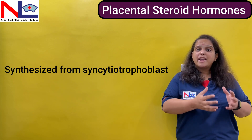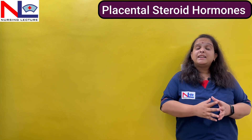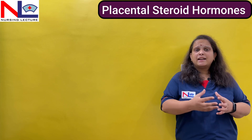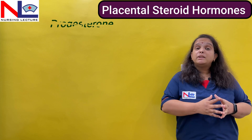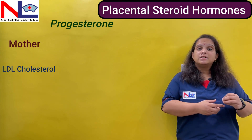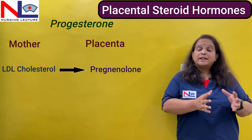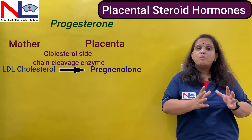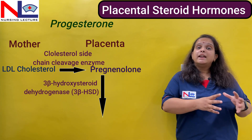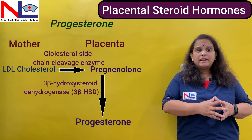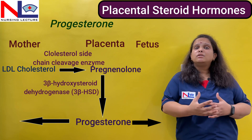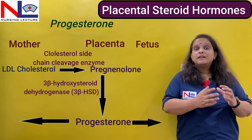To synthesize these hormones, the placenta utilizes some precursors — that is, the raw material that are formed previously and then changed into these steroid hormones. If we talk about progesterone, to synthesize it the placenta uses maternal LDL cholesterol. This low-density lipoprotein cholesterol is changed into pregnenolone by the cholesterol side-chain cleavage enzyme. Then 3-beta-hydroxysteroid dehydrogenase (3β-HSD) works upon this pregnenolone and converts it into progesterone, which then diffuses into both the maternal and fetal circulation rather than being stored.